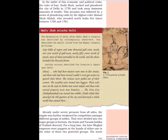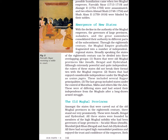Already under severe pressure from all sides, the empire was further weakened by competition amongst different groups of nobles. They were divided into two major groups or factions, the Iranis and Turanis, nobles of Turkish descent. For a long time, the later Mughal emperors were puppets in the hands of either one or the other of these two powerful groups. The worst possible humiliation came when two Mughal emperors, Farooq Seer and Alamgir II, were assassinated, and two others, Ahmed Shah (1748-1754) and Shah Alam II, were blinded by their nobles.